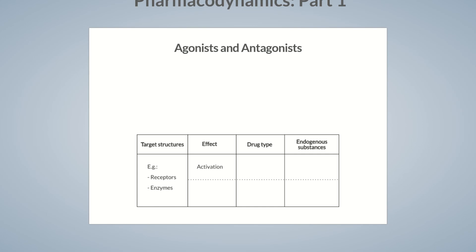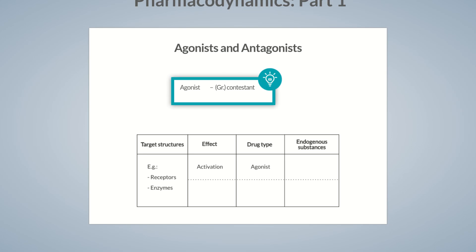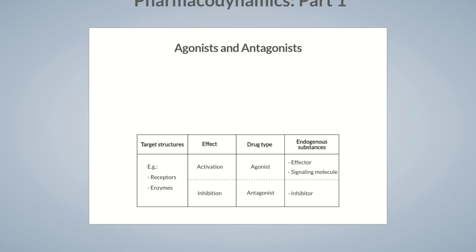Drugs that activate a receptor or an enzyme are termed agonists, whereas drugs that have an inhibiting effect are called antagonists. The effect of an agonist is comparable to that of a natural enzyme effector or an endogenous signaling molecule for a receptor. In contrast, antagonists are analogous to natural inhibitors of enzymes or receptors.